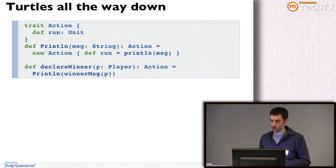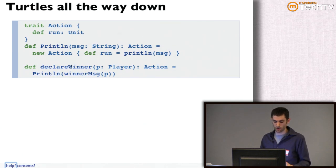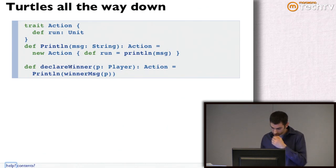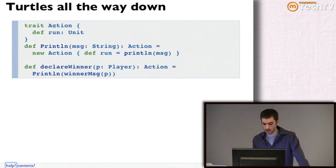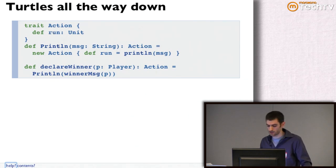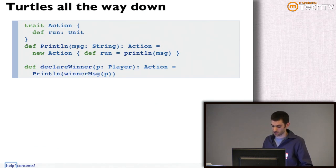Here, what I've done is take the function declare winner, which we were thinking of as necessarily requiring side effects because it actually needs to print the message. Instead, I've introduced a type I called Action. It has this completely opaque method run, which is really just 'interpret the action.' And this function printLine — capital P — instead of actually doing the side effect, it's just returning an action that when interpreted will produce the side effect.